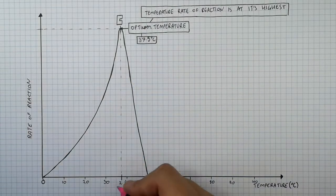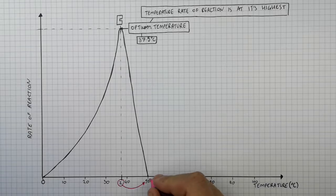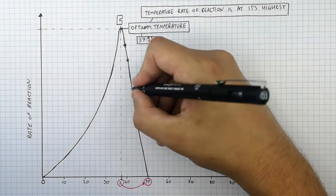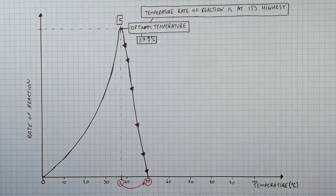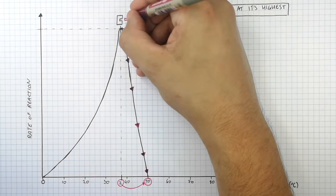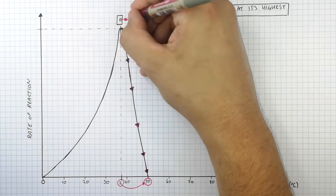If we increase the temperature from 37.5 degrees Celsius, which is the optimum temperature, and we increase it above the optimum temperature — in this case to 50 degrees Celsius — the rate of reaction decreases. At its optimum temperature, the enzyme is breaking down or making products at its maximum rate.